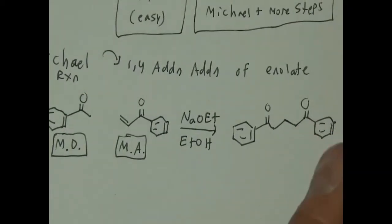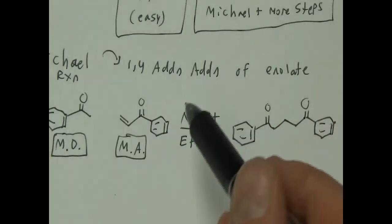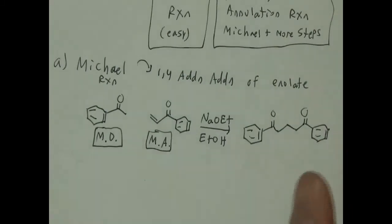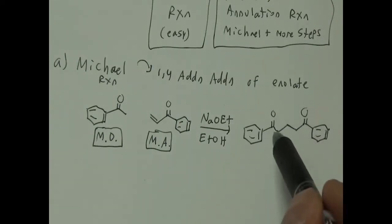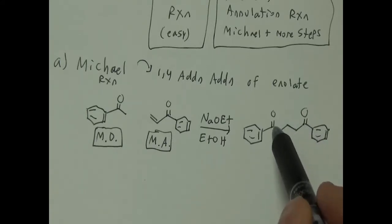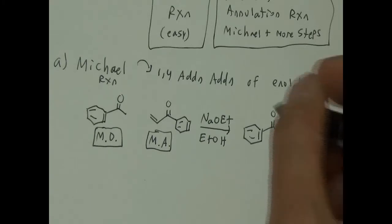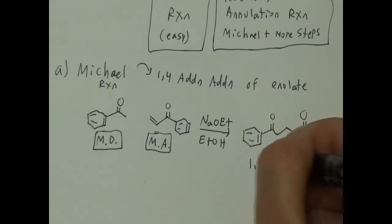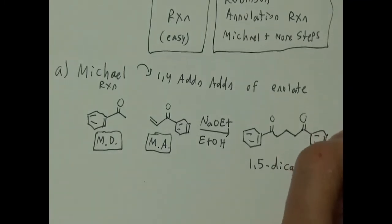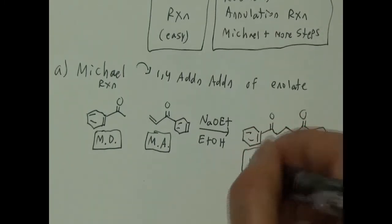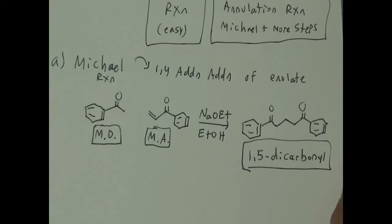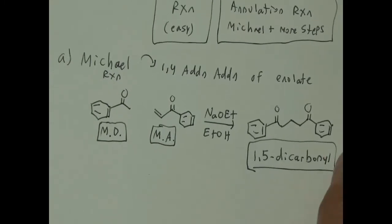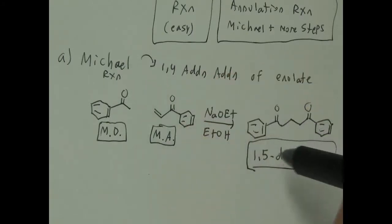One thing you should know about the product of a Michael reaction: the arrangement of the two ketones has a specific numbering. It's one, two, three, four, five. I call this a 1,5-dicarbonyl. If you draw something that looks like a 1,4-dicarbonyl or a 1,6-dicarbonyl, you messed up. The product of a Michael is always a 1,5-dicarbonyl, and you should always double check that.